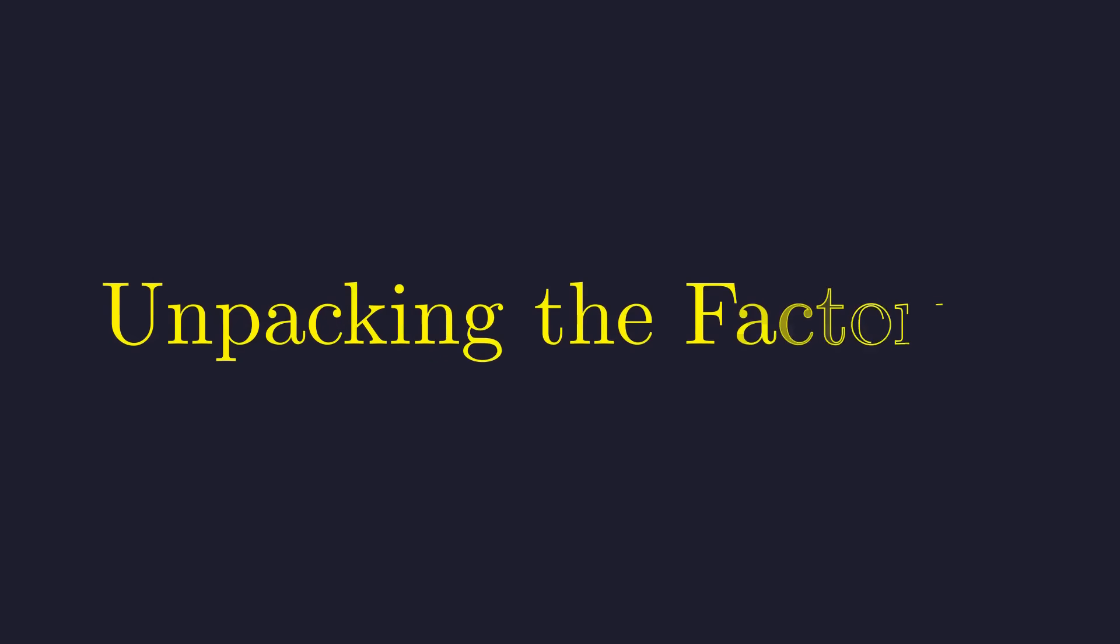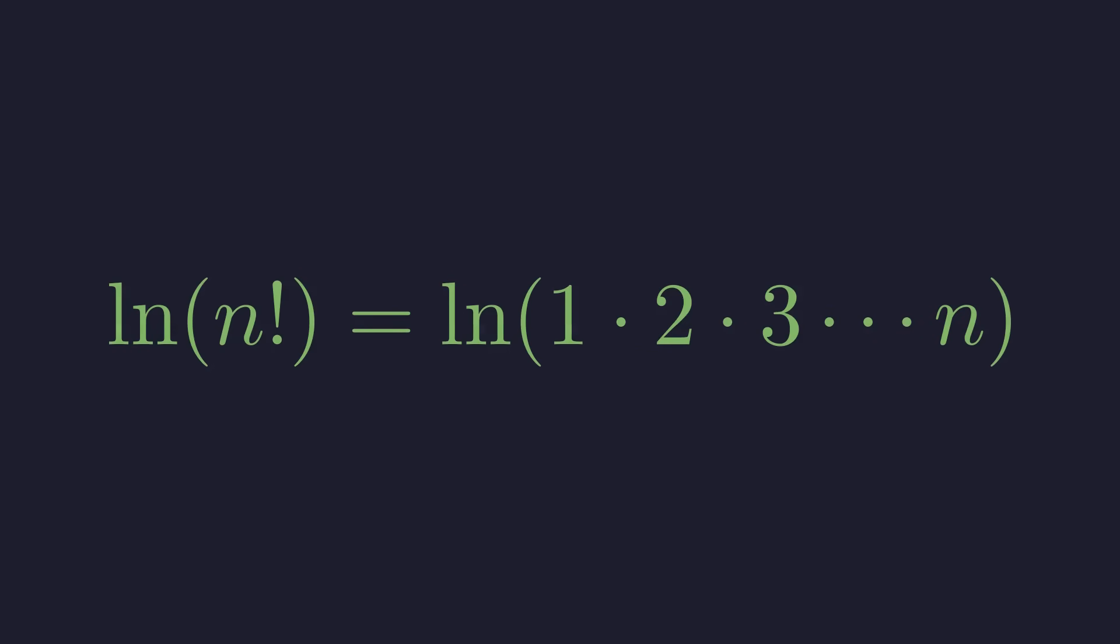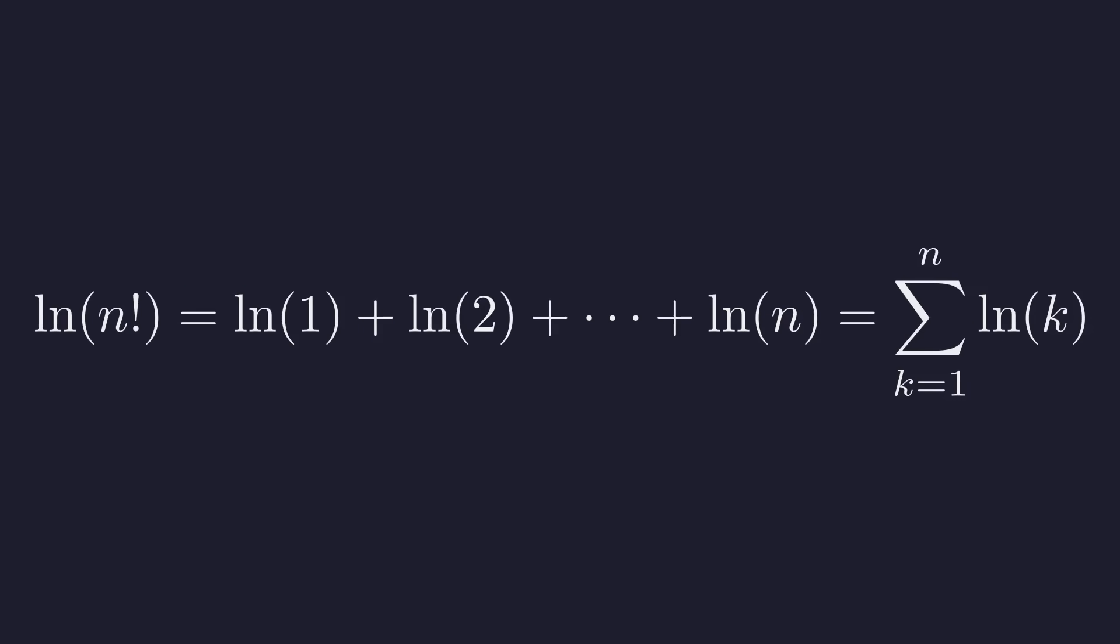Now, we need to deal with the natural log of n factorial. By definition, n factorial is the product of all integers from 1 to n. The logarithm of a product is the sum of the logarithms. This property is the key to unlocking the next step. So, the natural log of n factorial becomes a summation of the natural log of k, from k equals 1 to n.